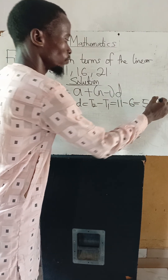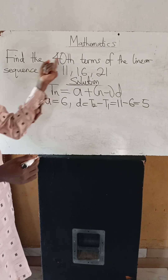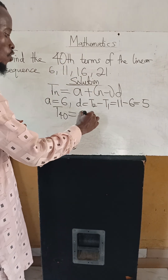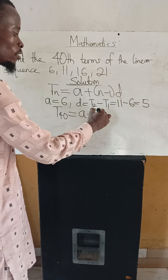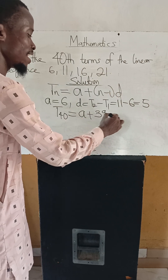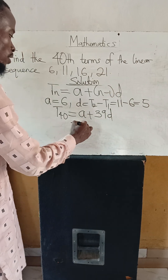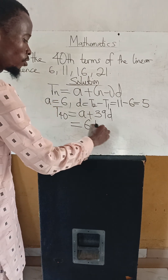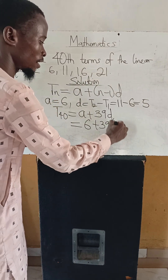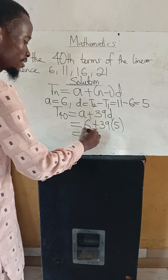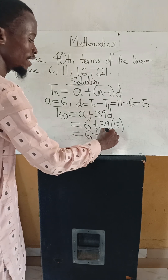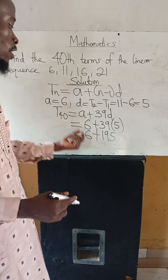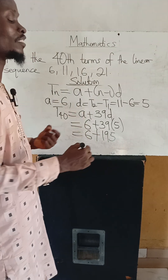We now have to find the 40th term. T(40) = a + (40 - 1) × d. Our first term is 6, so that is 6 + 39 × 5. That gives us 6 + 195, since 39 times 5 equals 195.